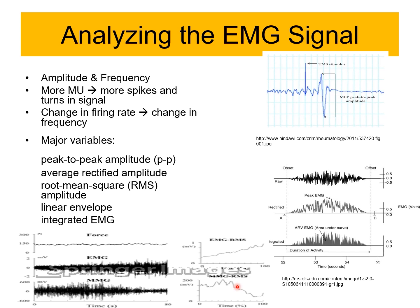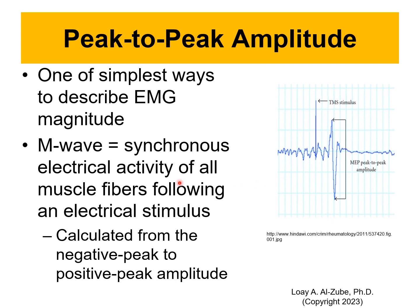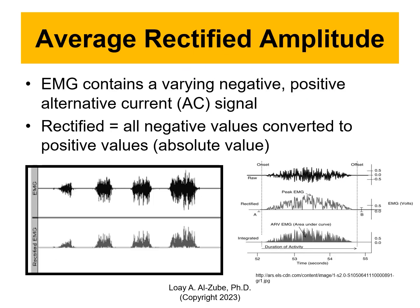I can get a lot of parameters from signal analysis, but I need to link them clinically with something useful. That's big data analysis — we have the wearable, we designed it, collected the data, and need to do processing in the microprocessor. The EMG contains a varying negative and positive AC signal. Rectified means all negative values are converted to positive or eliminated. Root mean square value does not require rectification. The linear envelope is the shape, and the integration gives the area under the curve. Raw data by itself is meaningless — if you start comparing things, it becomes valuable information.